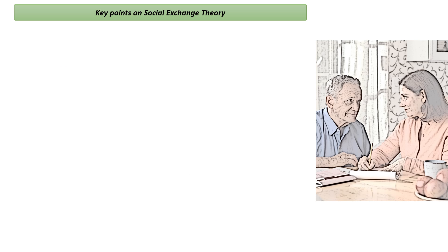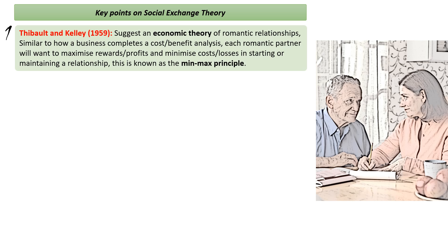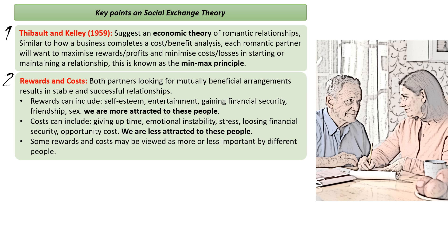Our key researchers in this area are Thibaut and Kelley. What they suggested was an economic theory of romantic relationships — the suggestion that we see our relationships similar to how a business sees a transaction. A business will carefully consider the costs and benefits of doing business, and will only go ahead if they're going to be in profit. So if each romantic partner wants to maximize their rewards and minimize their costs, they're using what's called the min-max principle. The theory goes that if both partners are looking for mutually beneficial profit results, this will result in a successful relationship.